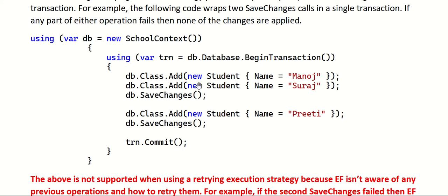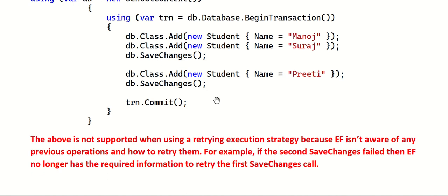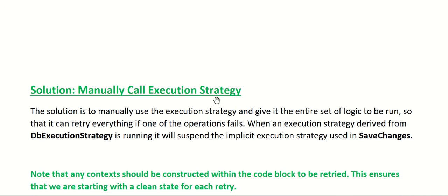If any one of those operations fails, it will roll back all applied changes. However, the same code is NOT supported when using the retrying execution strategy, because EF is not aware of previous operations and how to retry them. For example, if the second SaveChanges fails, EF no longer has the required information to retry the first SaveChanges — it doesn't have information about those records in order to call it again after establishing a new connection.